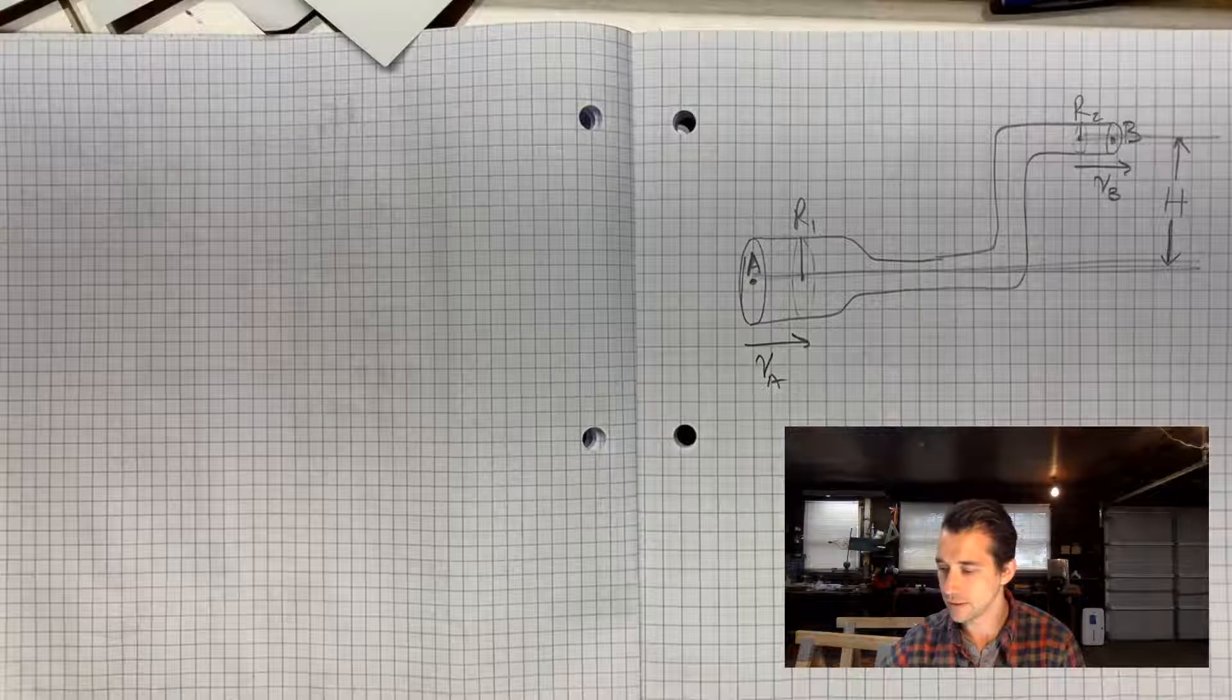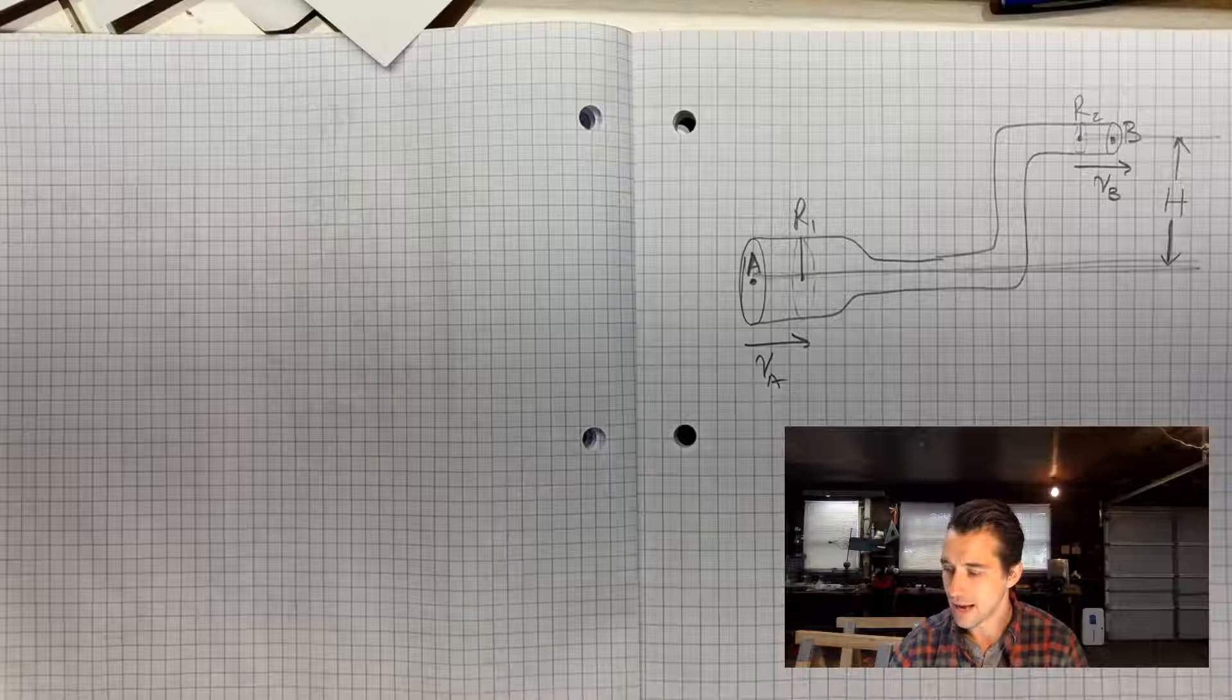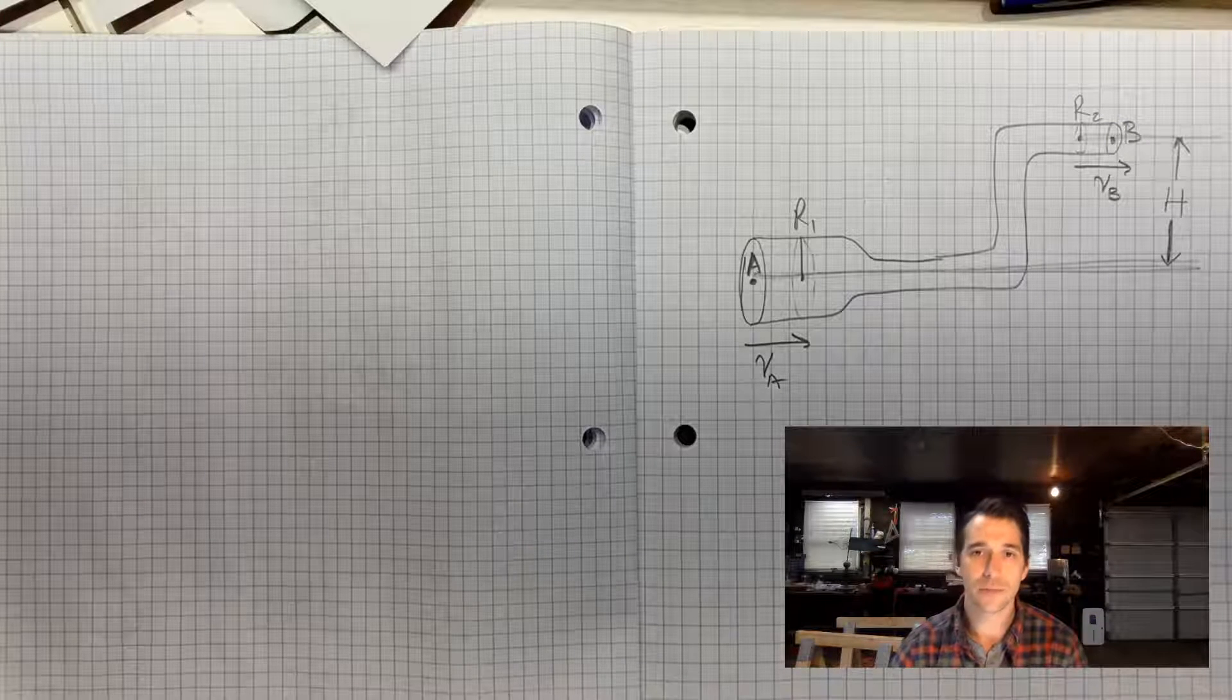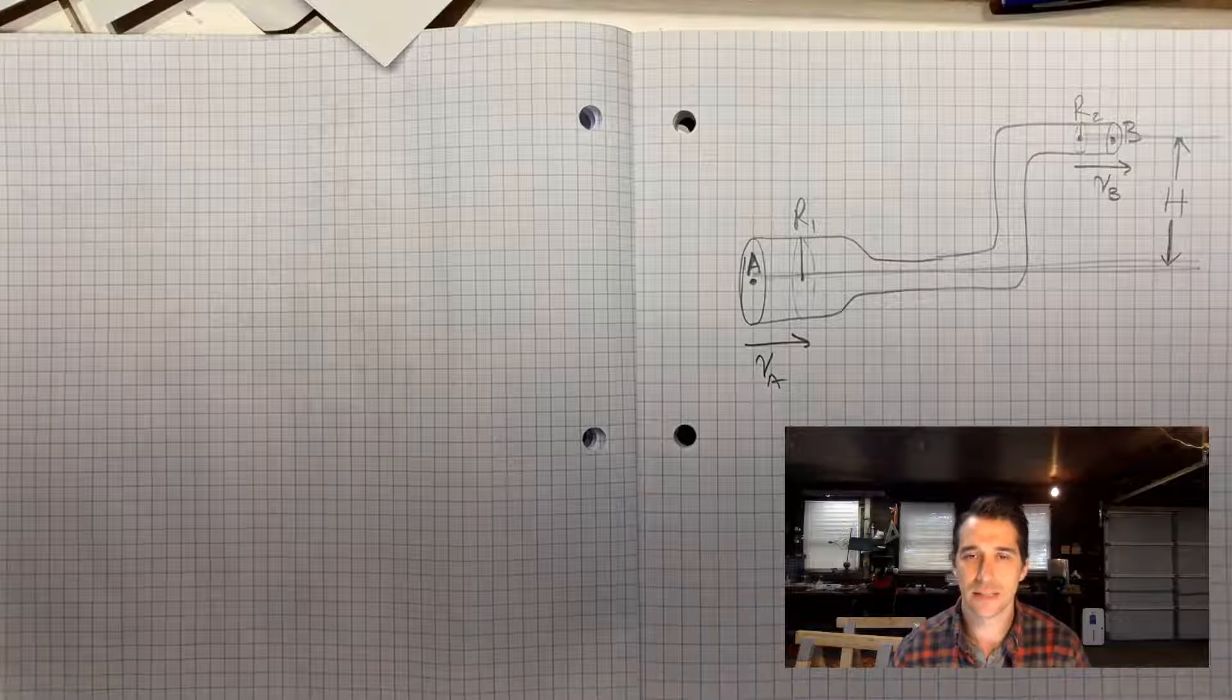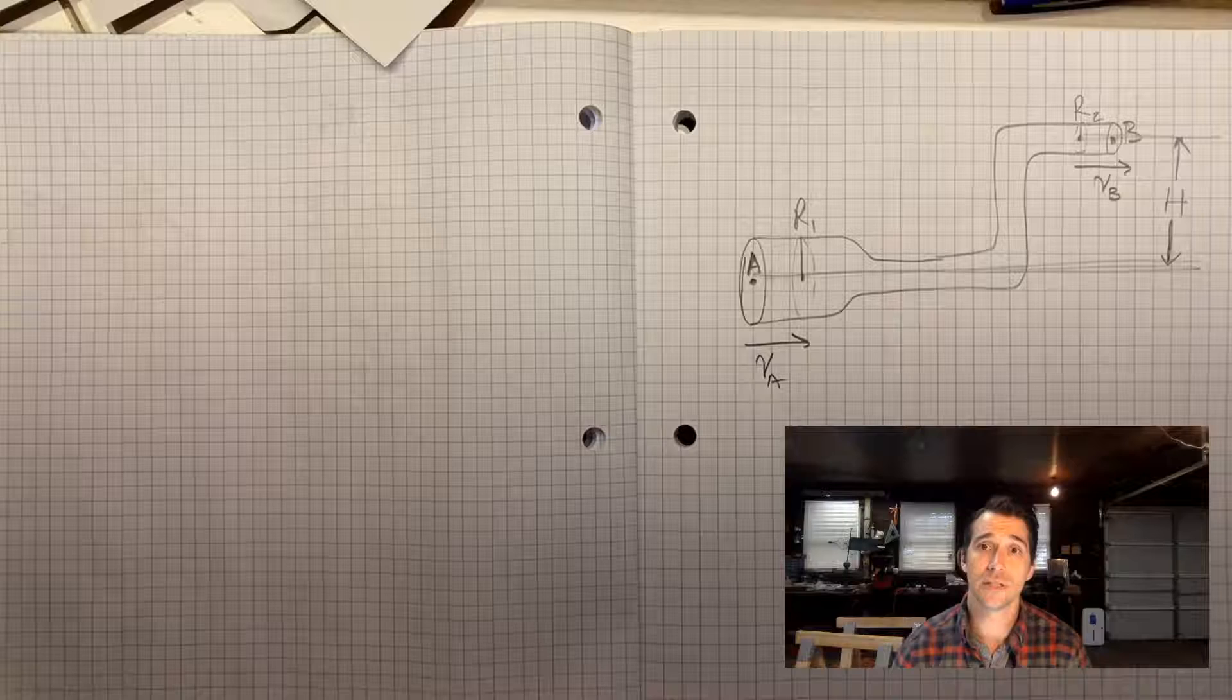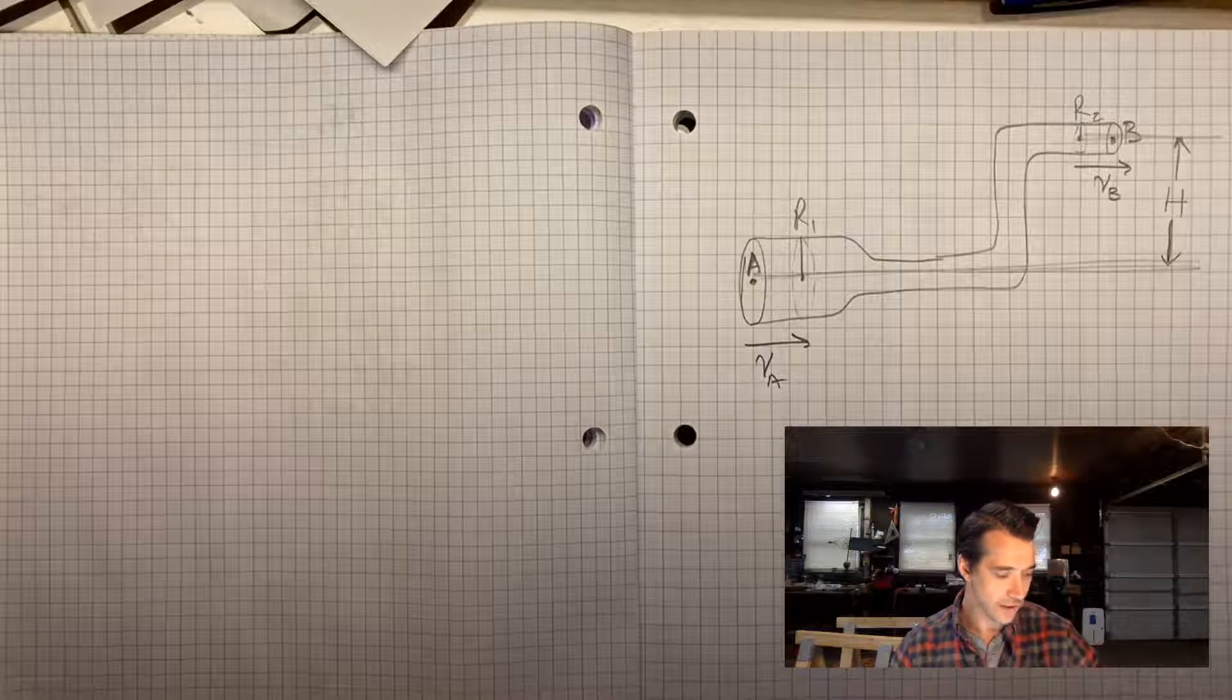There's a height difference of H from the center of each end of the pipe, and they ask, which of the following correctly gives correct reasoning about the water's properties as it moves from A to B? So before I even read these, this is a Bernoulli's equation problem.